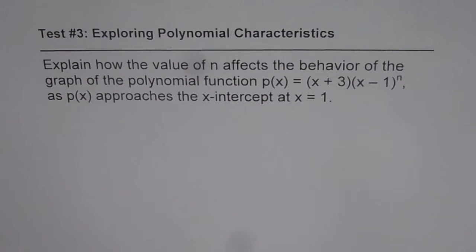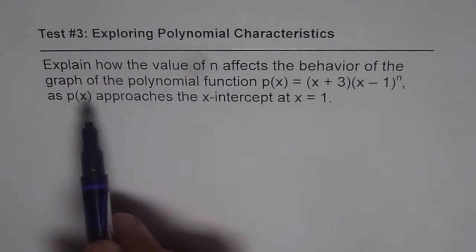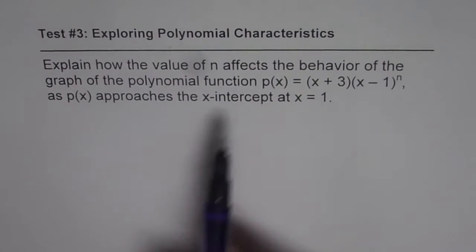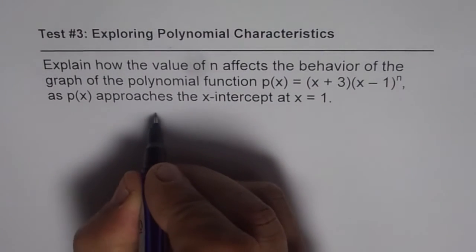In this test problem you can make a couple of mistakes which can be avoided. The first thing is to understand what we really need to explain. It says the behavior of the graph of the polynomial function as p of x approaches the x-intercept, and that behavior is dependent on the type of zero. So you have to analyze the zeros of your polynomial correctly.